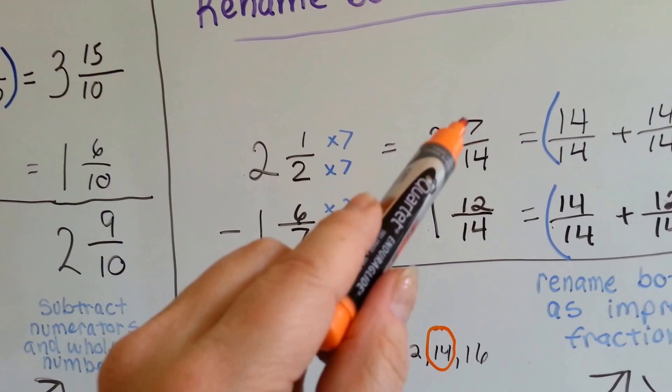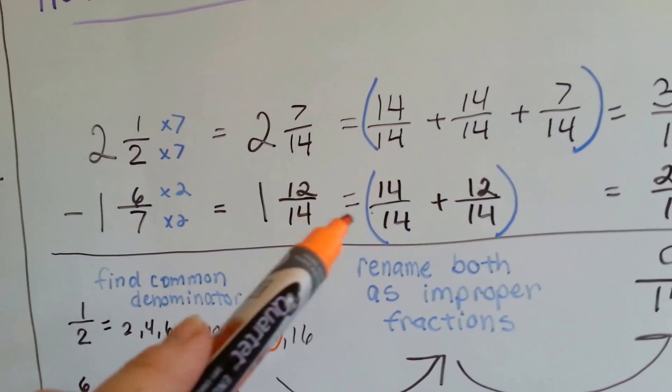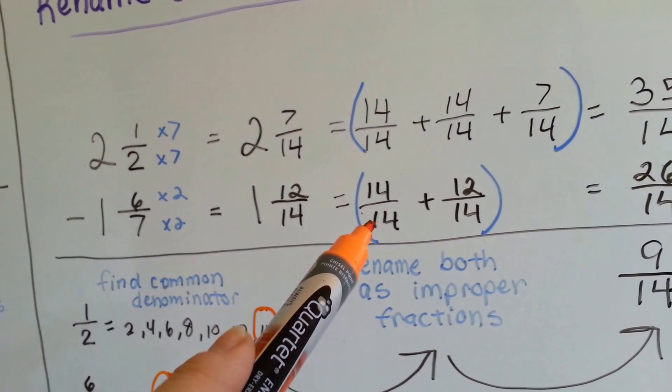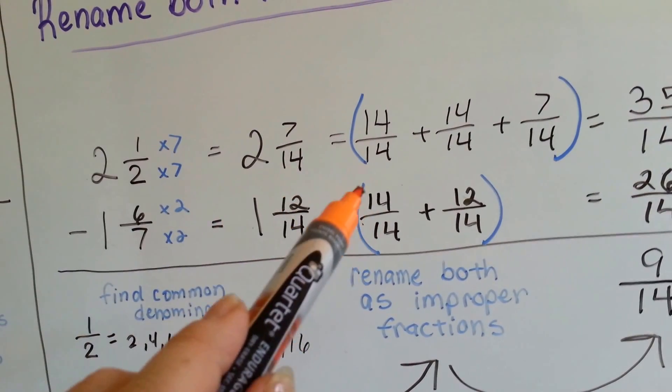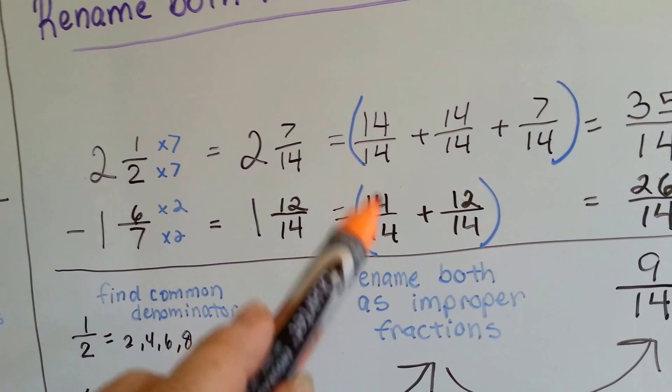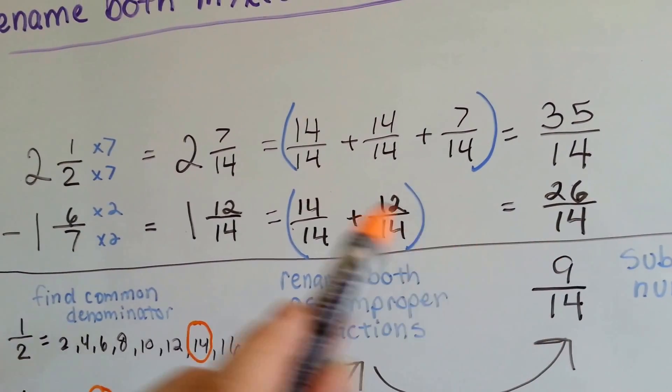but the 12 numerator is too big to subtract from the 7. So what we do is, knowing that 14 fourteenths is the same thing as 1, we turn the 1 and 12 fourteenths into a 14 fourteenths and a 12 fourteenths, add them together to get 26 fourteenths.